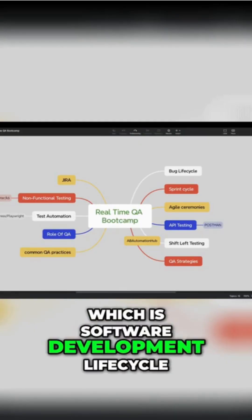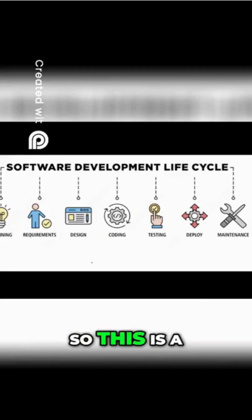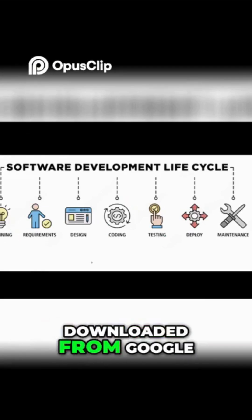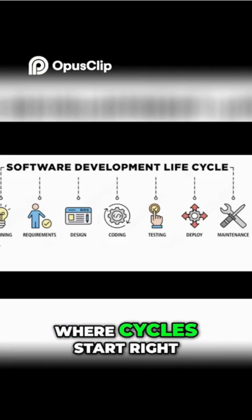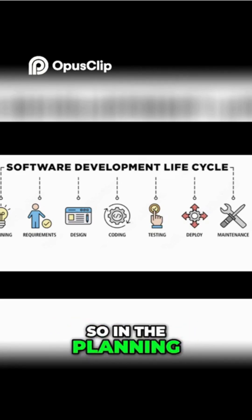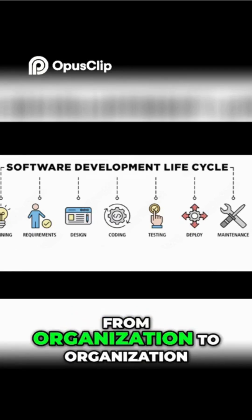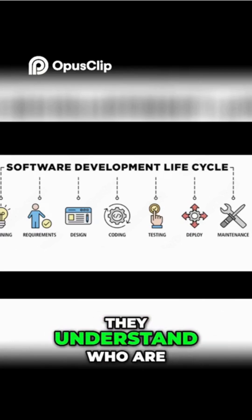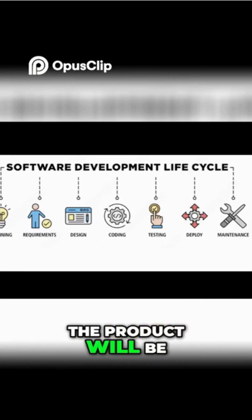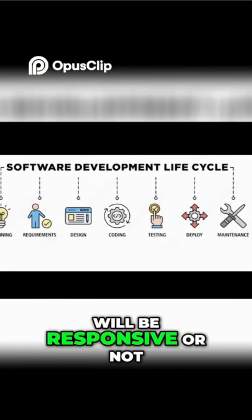SDLC, which is the Software Development Life Cycle, is the foundation of any project. This is a sample image downloaded from Google showing the standard software development life cycle. The cycle starts from the planning phase, where generally the BA, product owner, or product manager gathers requirements — understanding who the customers are, whether the product will be mobile or web, and what the targeted audience will be.